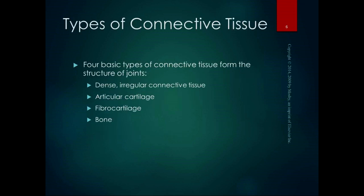The four basic types of connective tissue that form the structure of joints are dense irregular connective tissue, articular cartilage, fibrocartilage, and bone. Dense regular connective tissues are like tendons and ligaments. Specifically for joints, we're talking about dense irregular — which is your joint capsule — articular cartilage on the ends of the bones, fibrocartilage which is often in those amphiarthrotic joints and absorbs forces, and then bone — our bony levers.